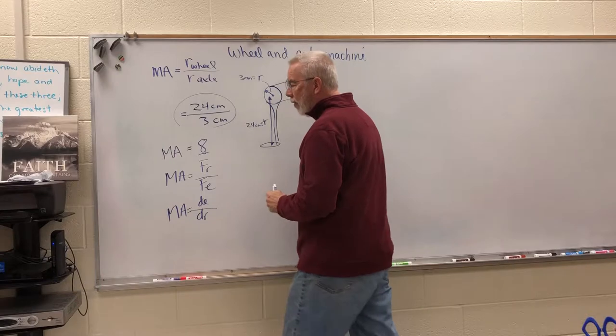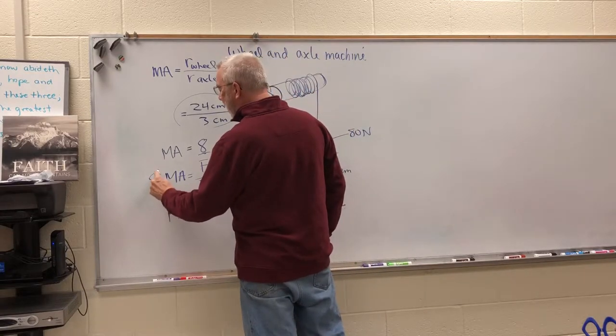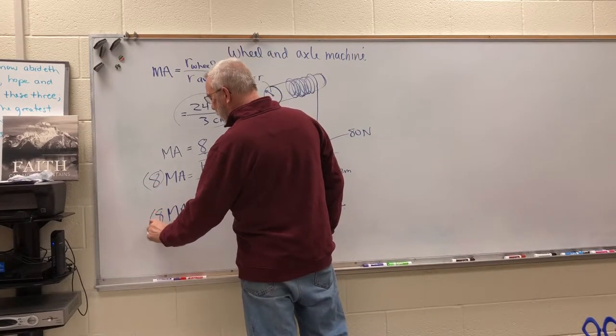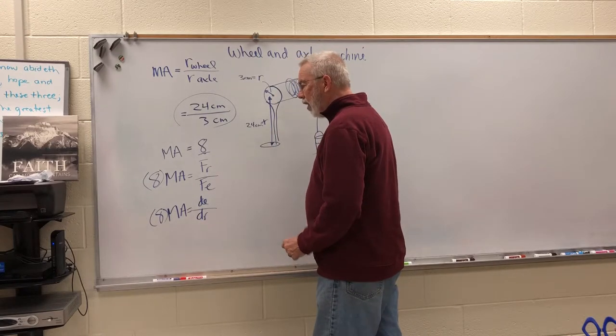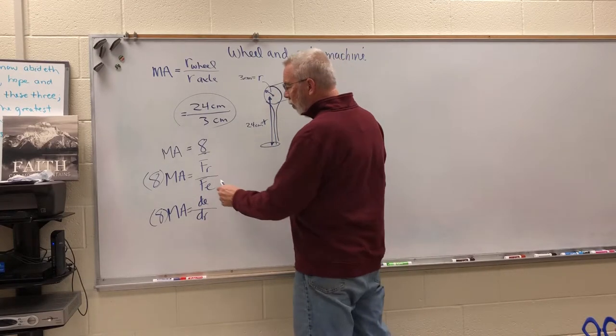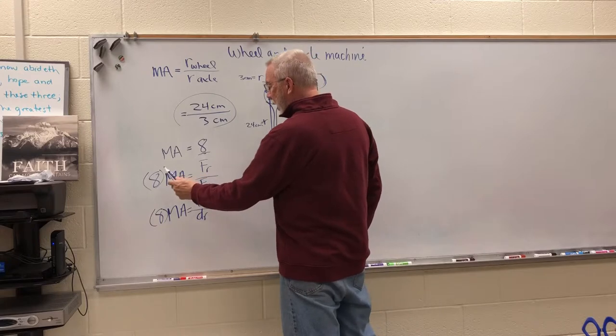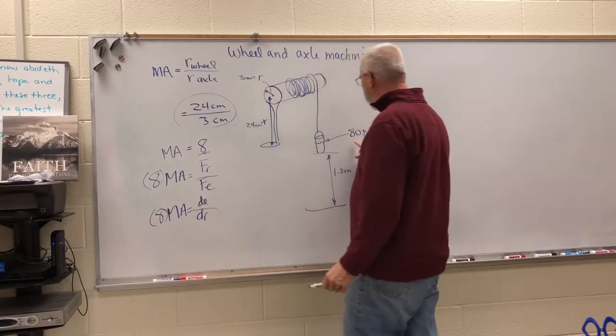Well once we know that this is 8 from what we did here, then we can substitute the 8 in here and we can substitute the 8 in here. So right away you should see that we got a mechanical advantage of 8, we said that the bucket has a weight of 80 newtons.